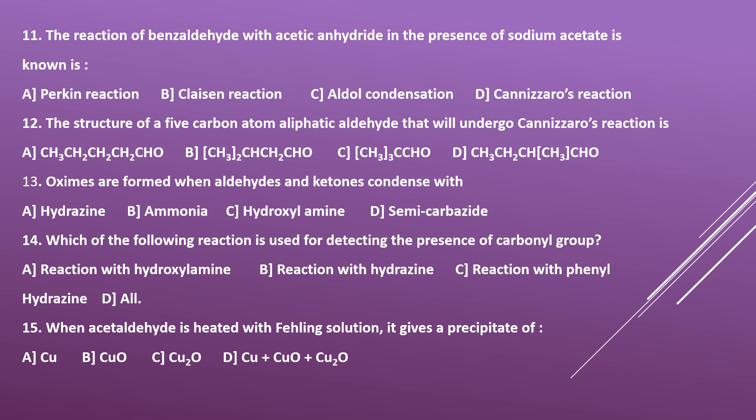If you write down the structures on paper, the adjacent carbon to the carbonyl group in options A, B, and D all have alpha hydrogens. However, option C has CHO with three methyl groups attached to the alpha carbon — there is no alpha hydrogen. So C is the right option, as it can undergo Cannizzaro reaction.